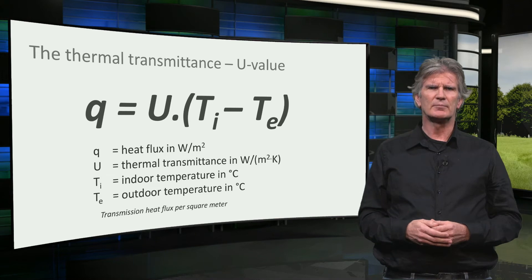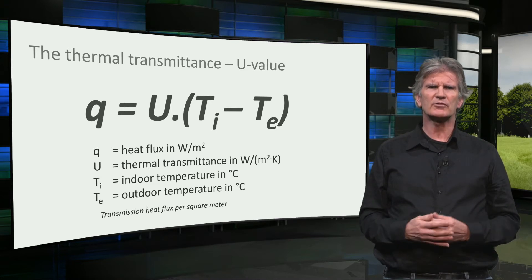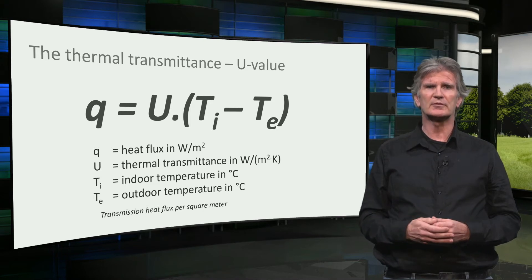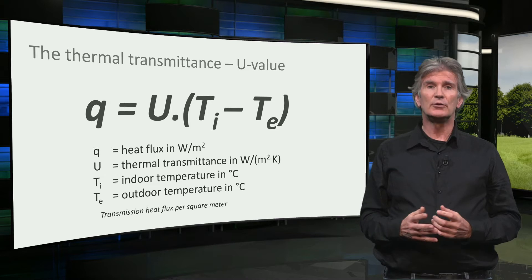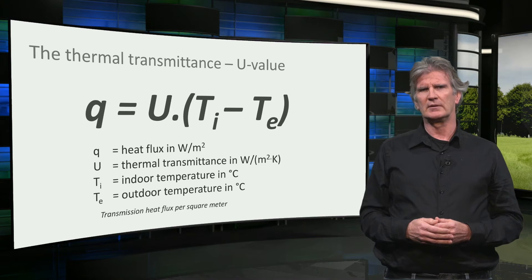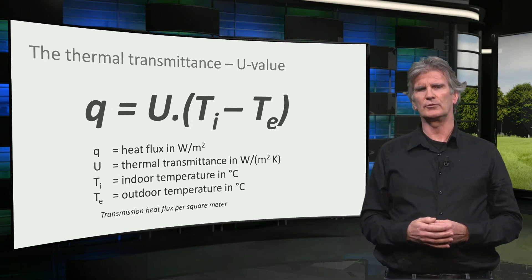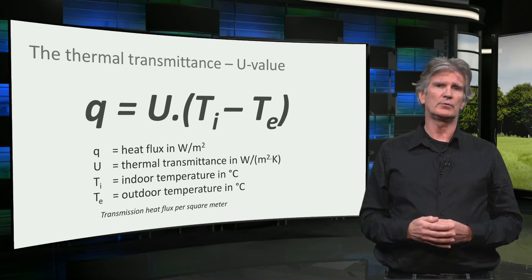The transmission heat loss through a part of the building envelope can be calculated with this formula. The heat flux through the building envelope in watts per square meter equals the U-value of the building part times the temperature difference between indoor and outdoor. The U-value is the thermal transmittance of the building element, with the unit watt per square meter per kelvin. It says how big the transmission loss per square meter is per degree temperature difference. So the lower the U-value, the better.